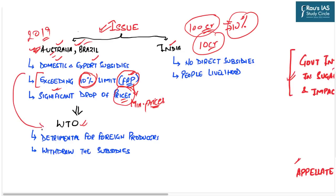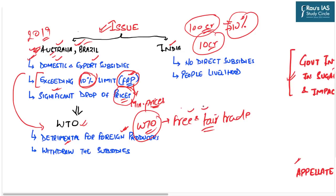The WTO ruled in favor of these countries, stating that India's subsidies are detrimental to foreign producers by giving unnecessary advantage to domestic producers. The WTO advocates for free and fair trade practices, aiming that no country should make policies that differentiate between domestic and foreign producers. There are certain reasonable restrictions for infant industries and developing countries, but broadly the WTO ruled that Indian government policies are detrimental to foreign producers.